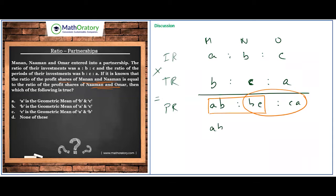What we know is ab/bc, this ratio is equal to bc/ca. You can see that bc cancels off and you can evaluate it as so.